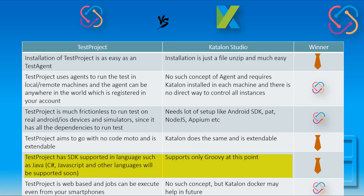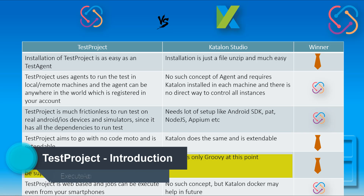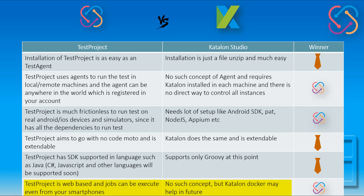TestProject has SDK support in Java, C#, and JavaScript, though C# and JavaScript SDK support is not yet ready, so Java is the only supported language as of now. Katalon Studio is built on the Eclipse IDE framework and supports Groovy — so the winner is a tie since both tools support one language. TestProject is web-based, meaning jobs can be executed even from your smartphone. You can go to the portal, select a test job, and run it with one click, which is not possible in Katalon Studio. The clear winner here is TestProject.